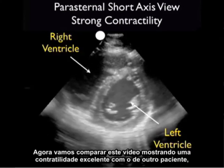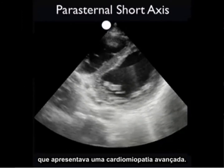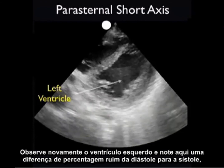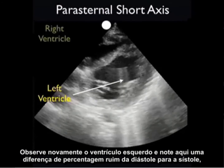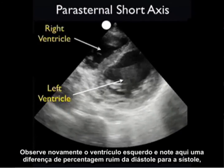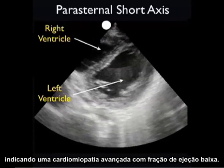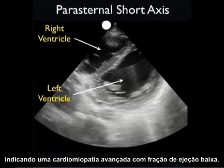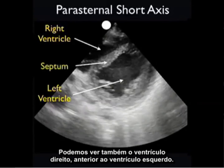Let's contrast this with another patient who had an advanced cardiomyopathy. Note the left ventricle, and note the poor percentage change from diastole through systole, indicating an advanced cardiomyopathy with low ejection fraction. We can also see the right ventricle anterior to the left ventricle.